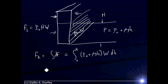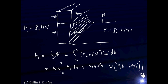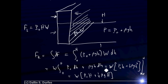This is a pretty simple integral. I bring W outside, then split into two integrals: the integral of p-naught·dh gives p-naught·H; the integral of rho·g·h·dh gives one-half·rho·g·H². Evaluating from zero to capital H and accounting for the fact that plugging in zero gives zero, the force on the right side is W times (p-naught·H plus one-half·rho·g·H²).